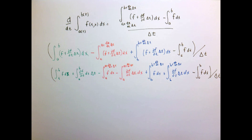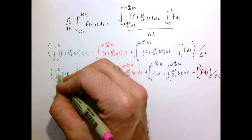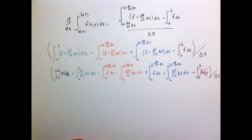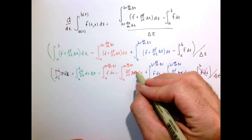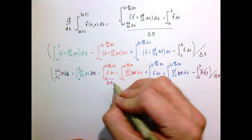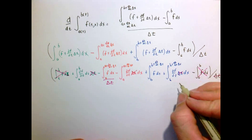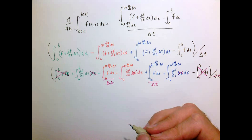I've expanded out every single term in my equation and now I can start looking for stuff that cancels. I might recognize terms with a plus and a minus — I can drop those out. The delta t divides everybody, so that delta t goes away, that delta t goes away, that delta t goes away. And these remaining terms then become divided by delta t.